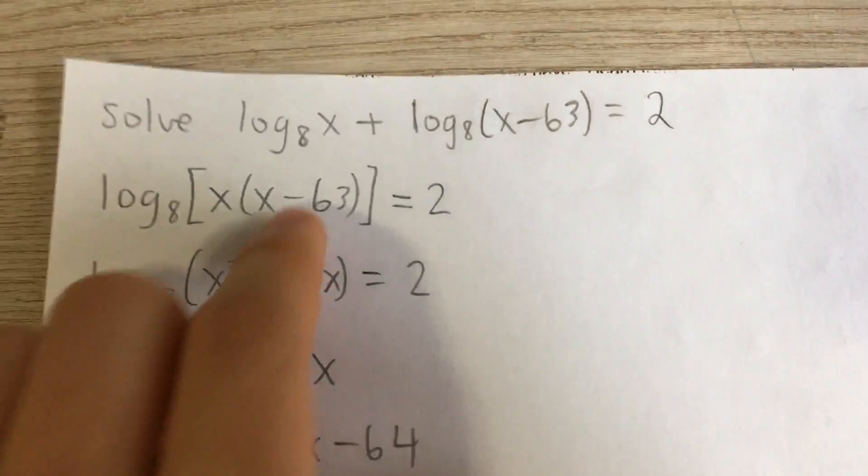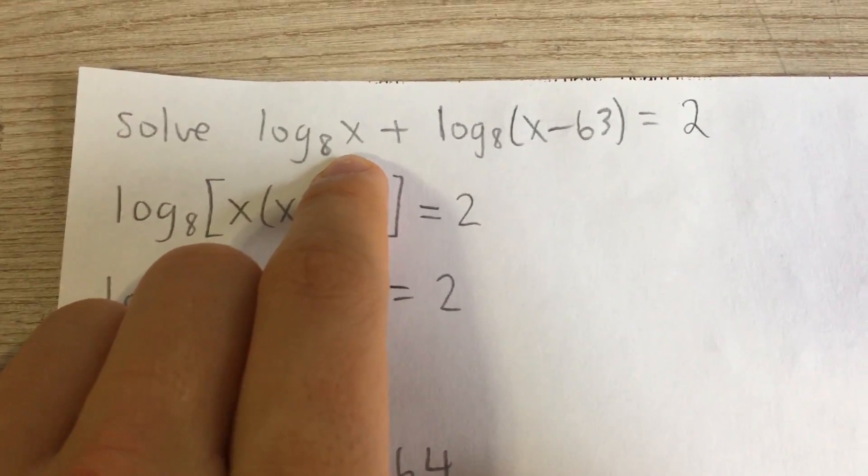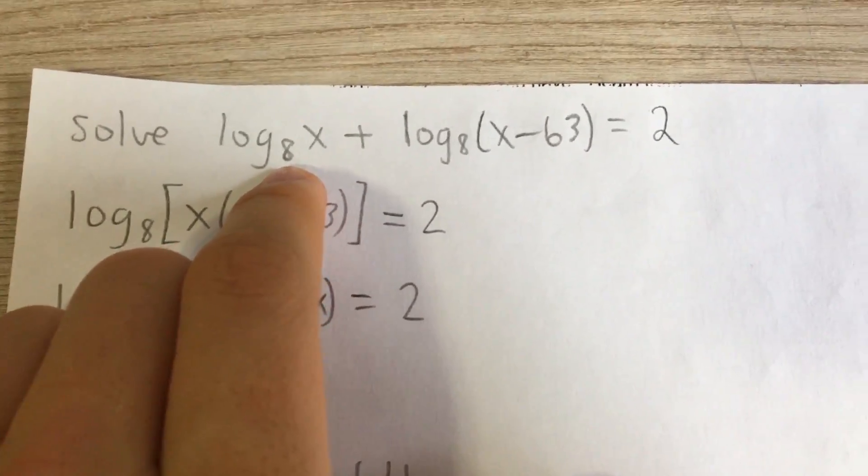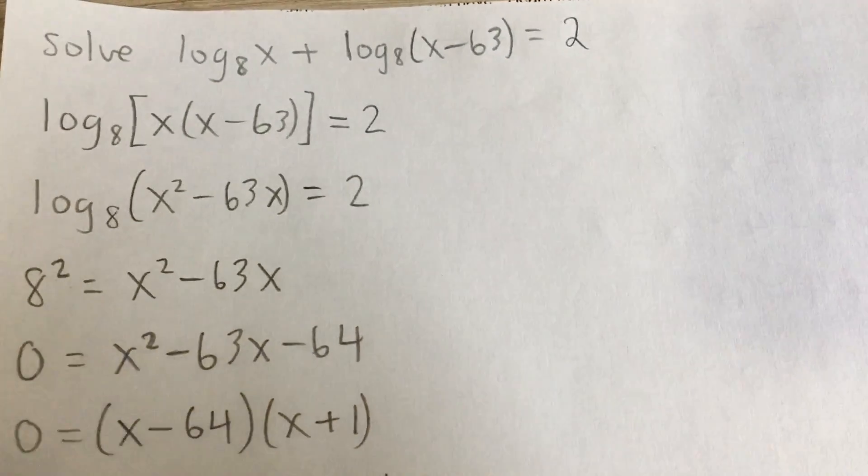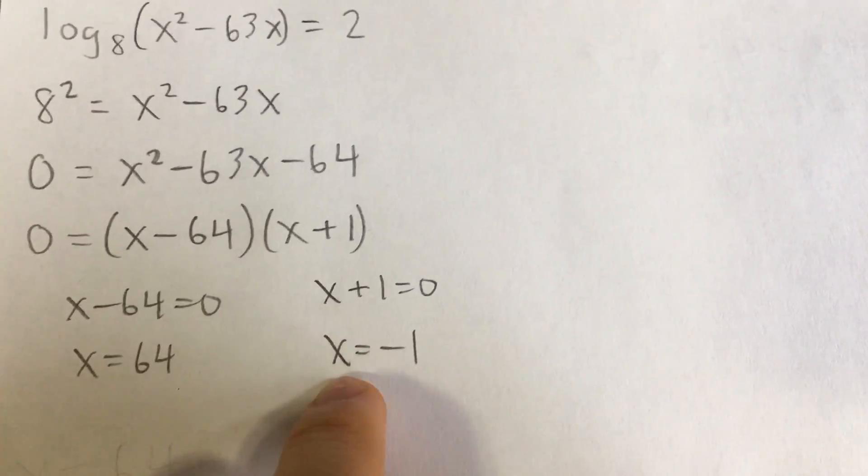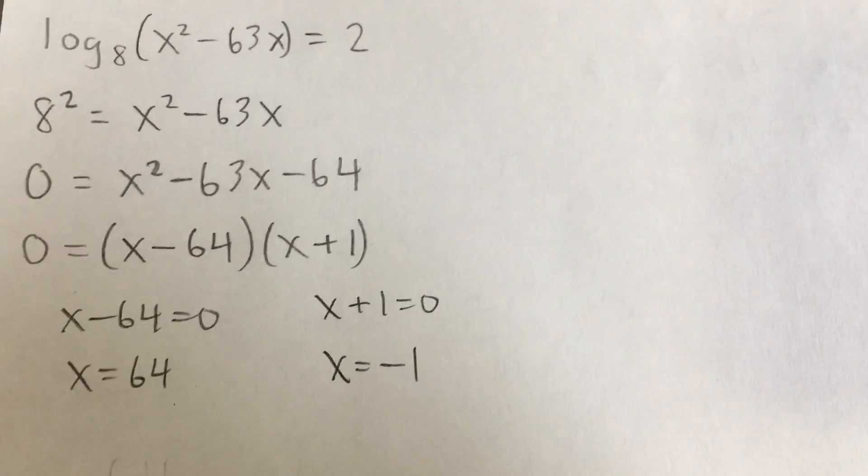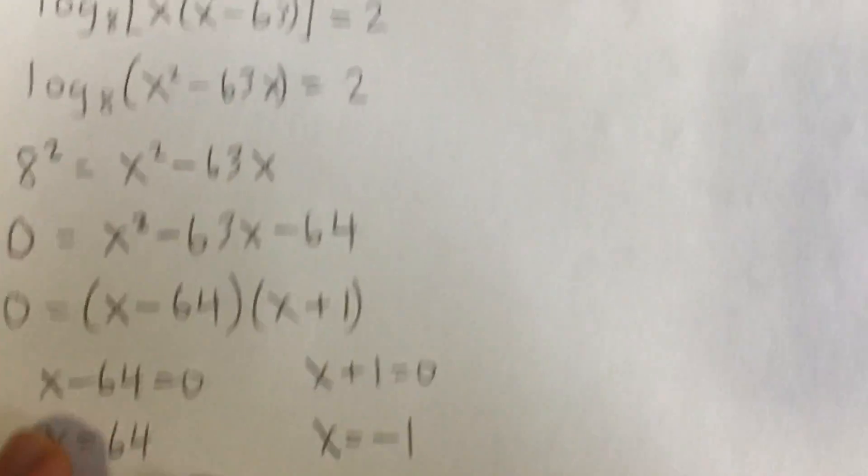If I plug in negative 1, log base 8 of negative 1. Well, you can't take the log of a negative number. It's not in the domain of the logarithm. So in other words, and also here, negative 1 minus 63, that's log of negative 64. Again, a negative number. You cannot take the logarithm of a negative number. So because x equals negative 1 is not in the domain of the original equation, this is what they call an extraneous root.